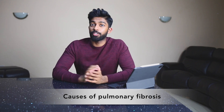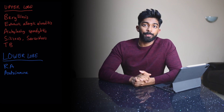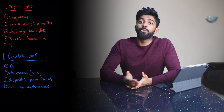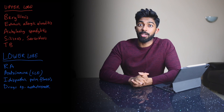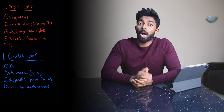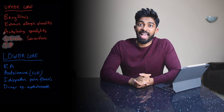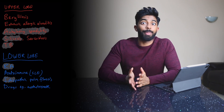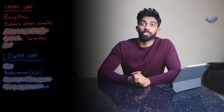A common follow-up question is: what are the causes of pulmonary fibrosis? It's nice to structure your answer by classifying causes. A useful mnemonic is BEAST for causes affecting the upper lobes, and RAID for causes affecting the lower lobes. You could say: 'Causes of upper lobe pulmonary fibrosis include silicosis, tuberculosis, and ankylosing spondylitis. Causes of lower lobe pulmonary fibrosis include rheumatoid arthritis, idiopathic pulmonary fibrosis, and drug-induced causes such as methotrexate.'